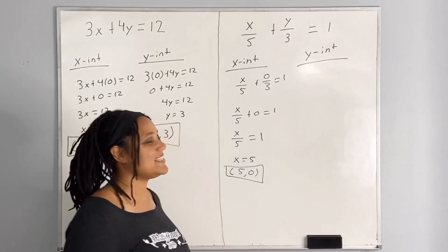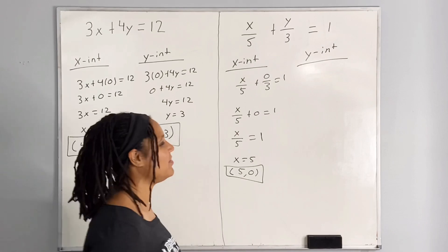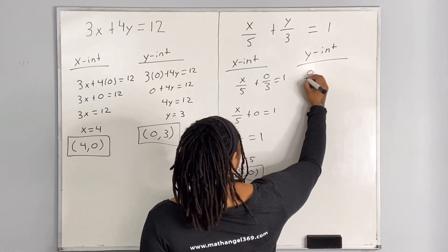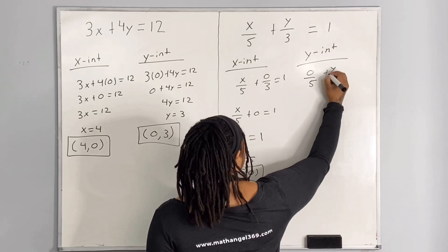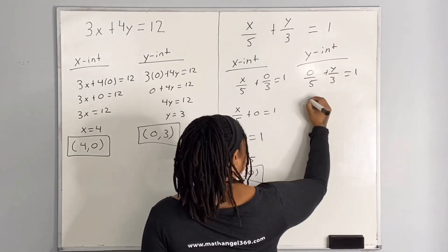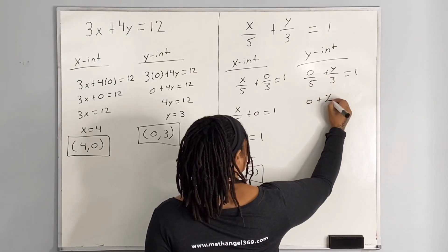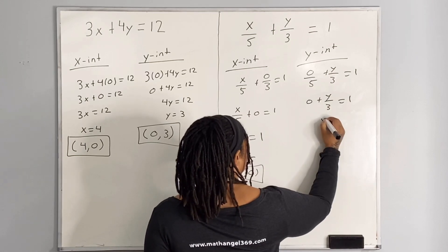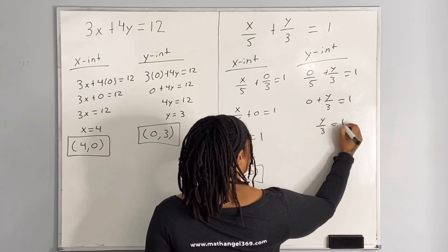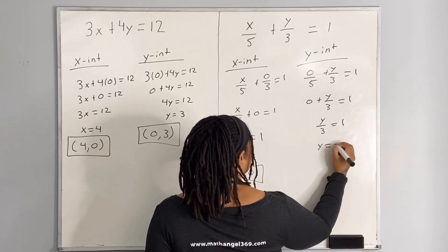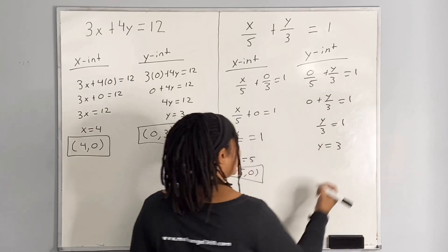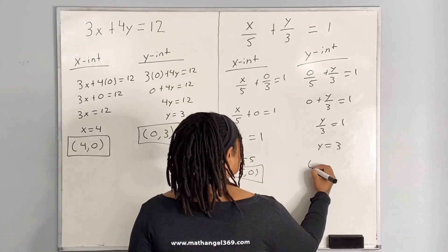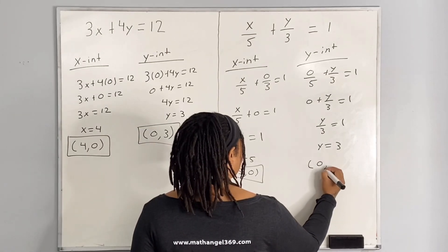We replace x with 0 and solve for y. So we have 0 over 5 plus y over 3 is equal to 1, which means we have 0 plus y over 3 is equal to 1, which means we have y over 3 is equal to 1, which means we have y is equal to 3. And we write our y-intercept as (0, 3).